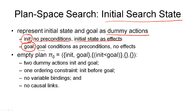Then we have another action in our plan, the goal action, which contains all the goal conditions as preconditions and has no effects. If this is the last action in our plan, then before we can execute this goal action, all the preconditions must first hold, which means the goal has been achieved. Our initial search state is then the empty plan consisting of the two dummy actions, init and goal, which we've just described.